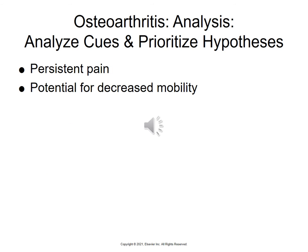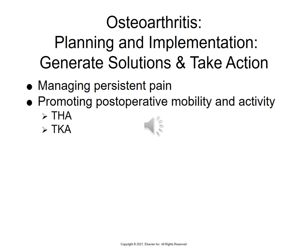Clinical cues and hypotheses: persistent pain and potential for decreased mobility. We want to manage these patients' persistent pain and promote post-op mobility and activity. A THA is a total hip arthroplasty; a TKA is a total knee arthroplasty — both are known as arthroplasties, meaning replacement. A revision includes resurfacing of the joint after a replacement is done.